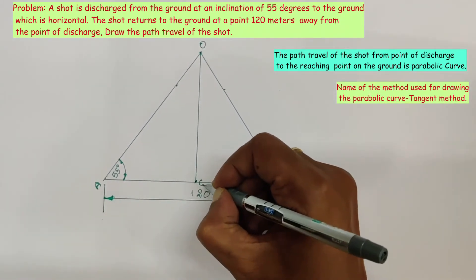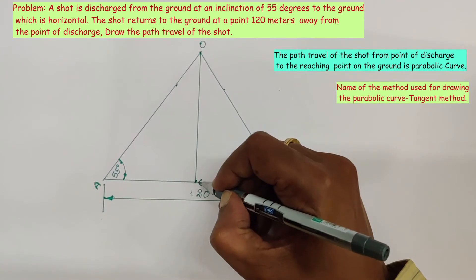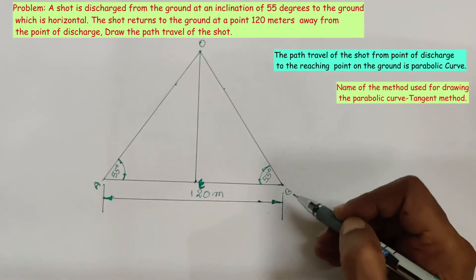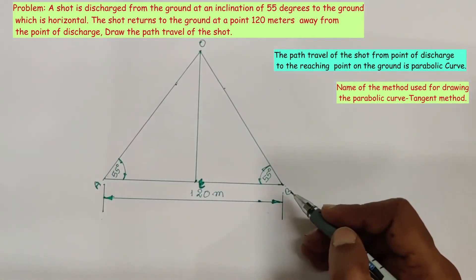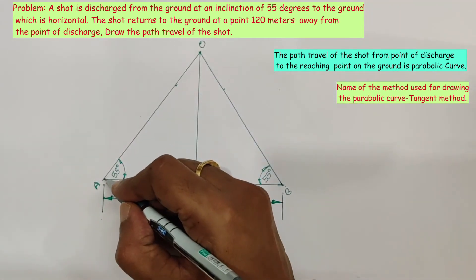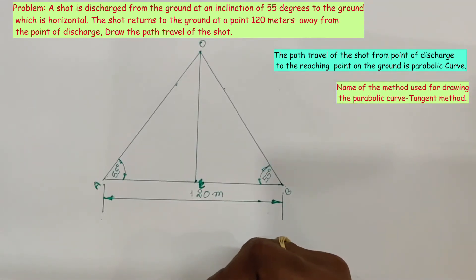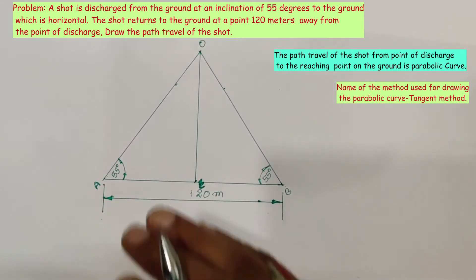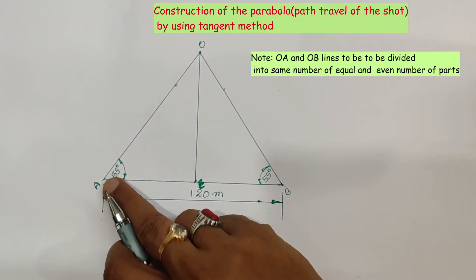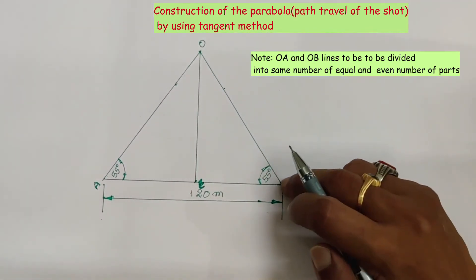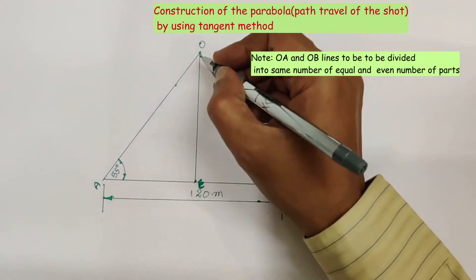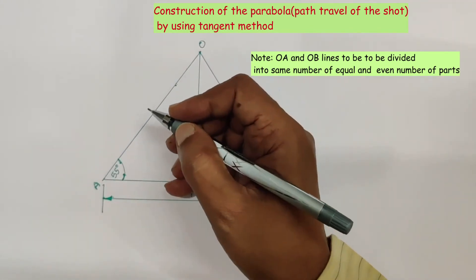Name this point as C. OC is two times the axis height of the parabola. We are going to draw the parabolic curve within this isosceles triangle OAB by using the tangent method. For that, divide the OA inclined line into an even number of equal parts, say 6 or 8 parts. Here we are going to divide the OA inclined line into 6 equal parts. Similarly we need to divide the OB inclined line also into 6 equal parts.